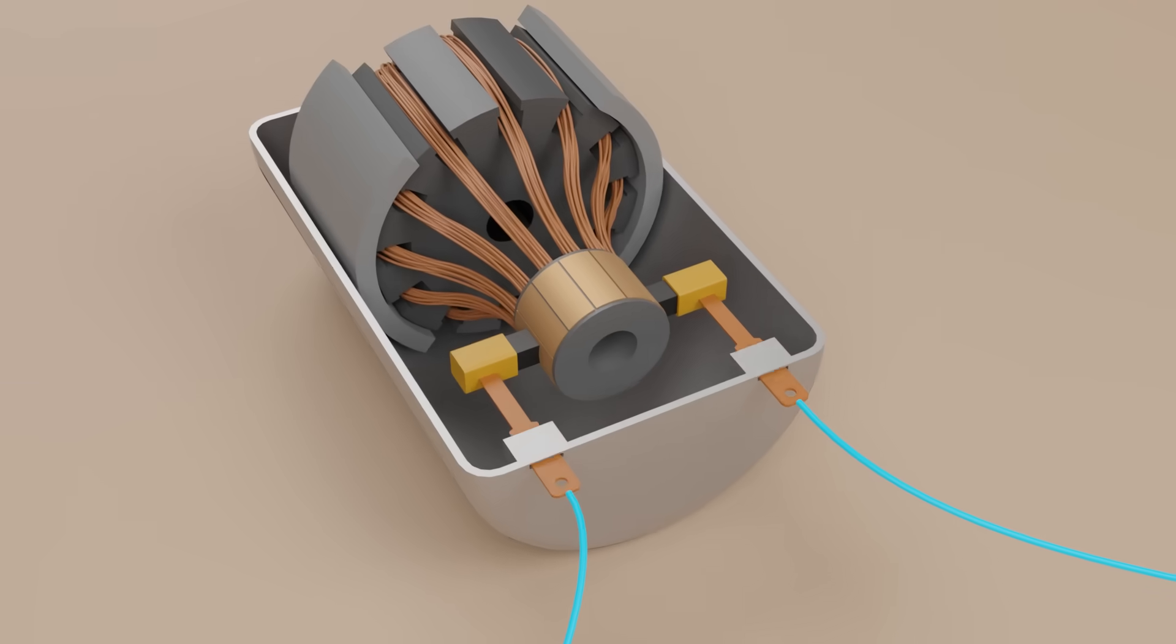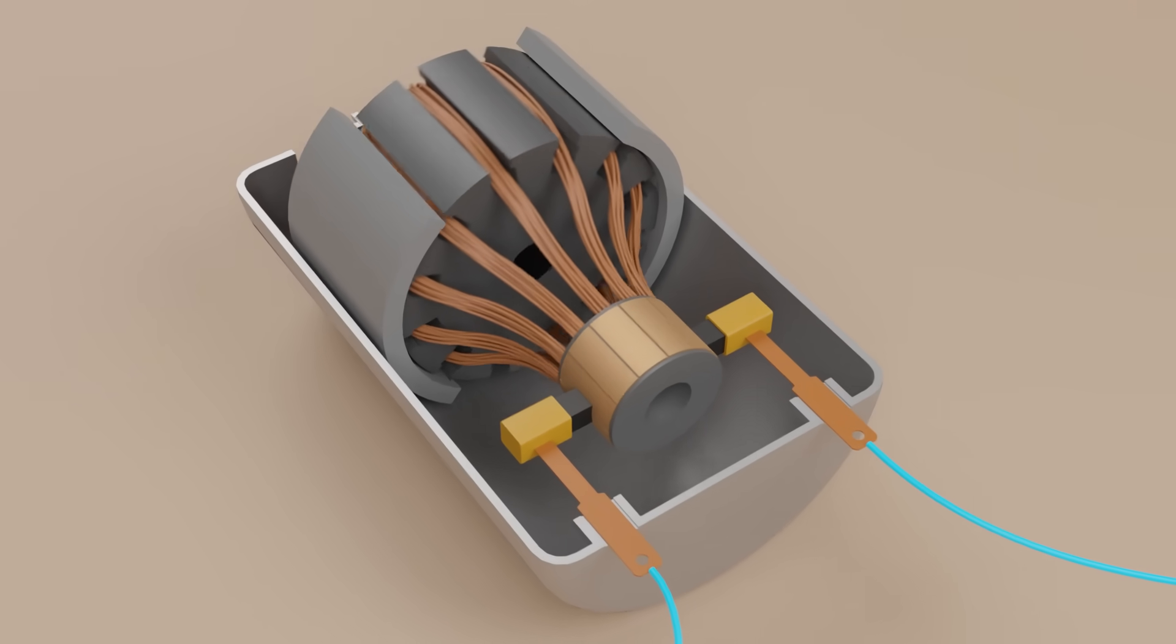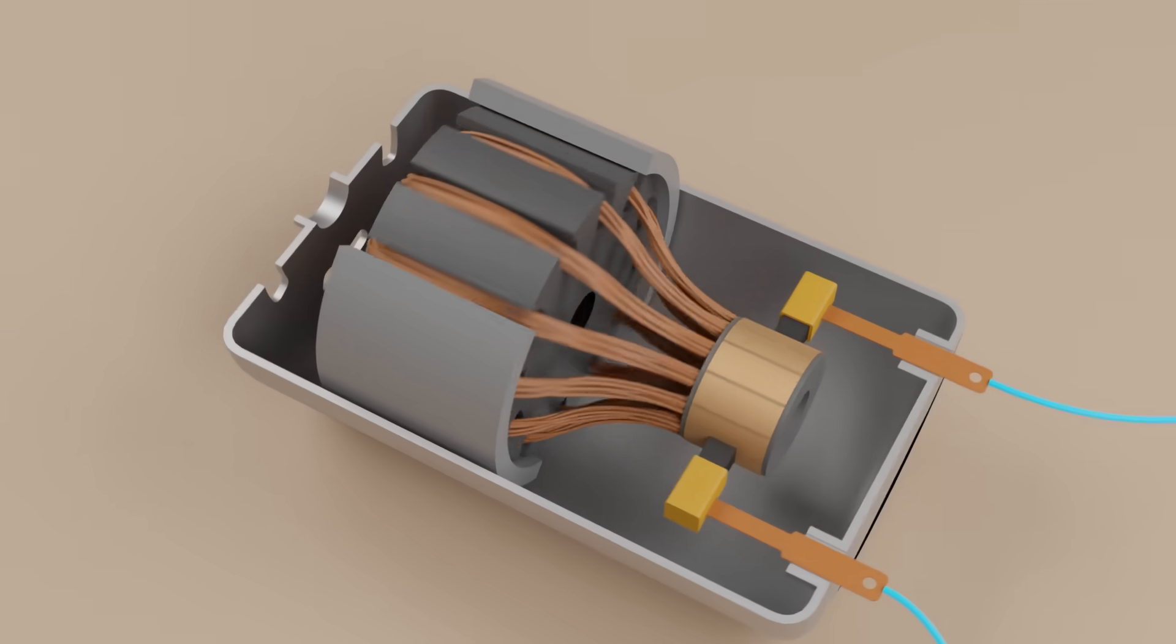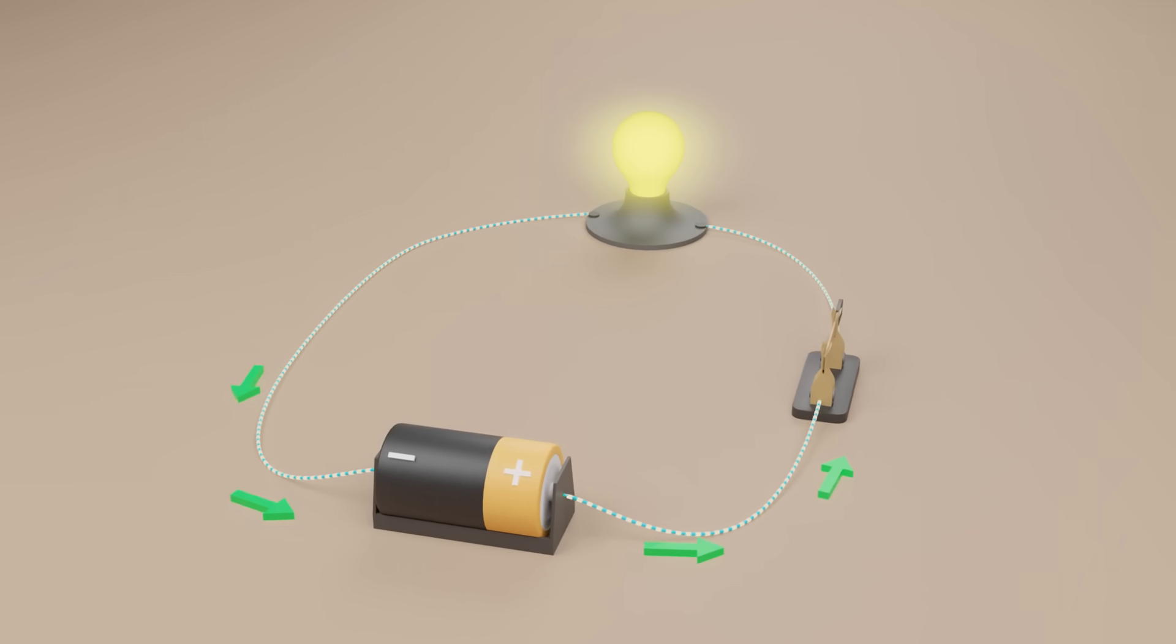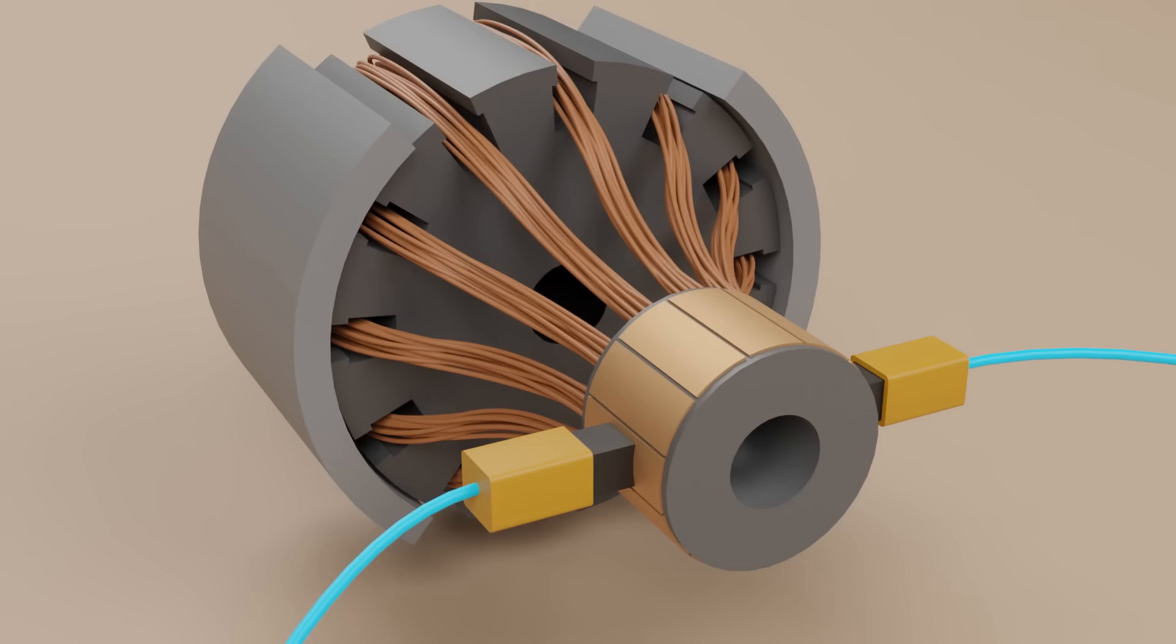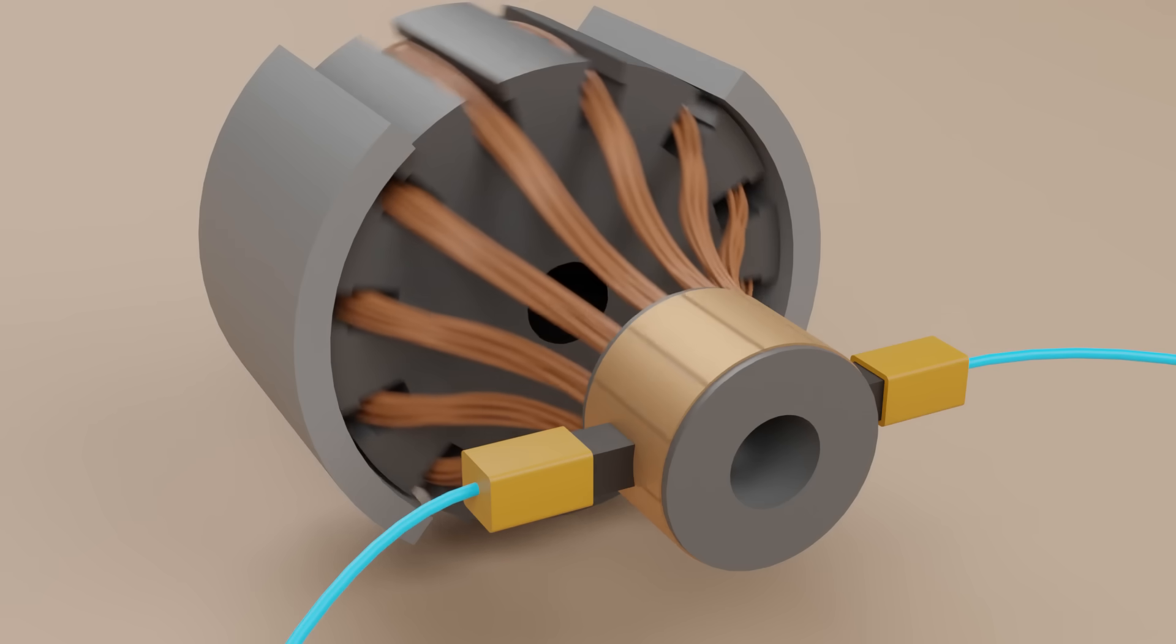But how does the electric motor work? You turn it on and somehow it starts rotating. Why is that? In this video, we'll cover the basics of electricity and magnets, and then put it all together to understand how the motor works.